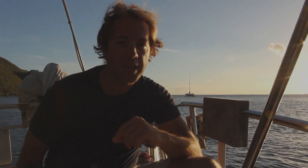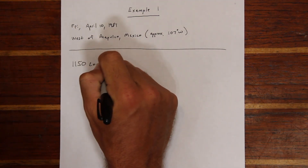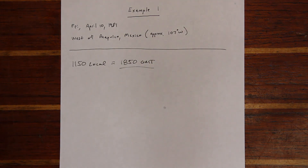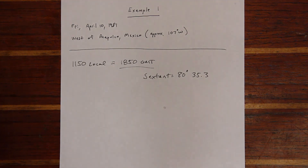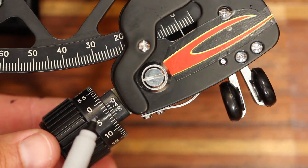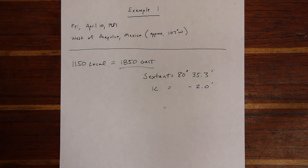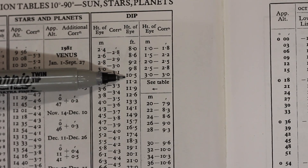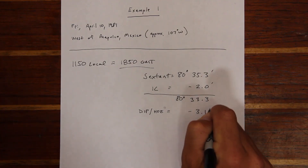Let's take a look at an example problem. We're west of Mexico at approximately 107 degrees longitude. A measurement taken at 1150 local time translates into about 1850 GMT. Our sextant measurement is 80 degrees 35.3 minutes. We start with index correction — we measure the horizon and determine that we have a 2-minute index error, so we subtract it and come up with a new figure. The second correction deals with height of eye. We're about 10 feet above sea level, so we look in the DIP table and come up with a correction of negative 3.1 minutes, and apply that to get a new figure.